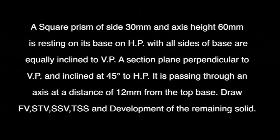A square prism of side 30mm and axis height 60mm is resting on its base on HP, with all sides of base equally inclined to the vertical plane. A section plane perpendicular to the vertical plane and inclined to HP at 45 degrees cuts the prism such that it passes through a point of the axis at a distance of 12mm below the top base.